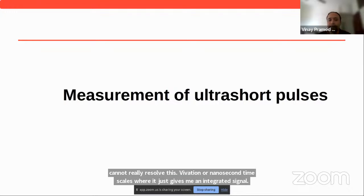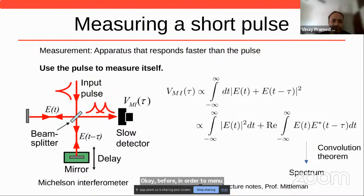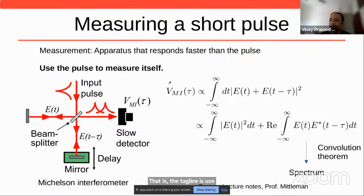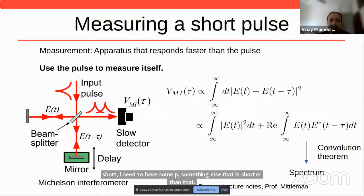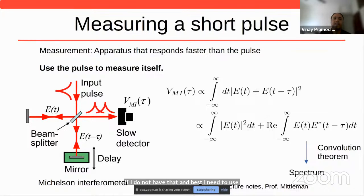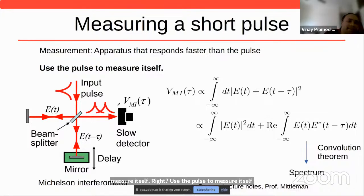To measure such ultrashort pulses, the technique researchers use is interference — the tagline being: use the pulse to measure itself. If I want to measure length, I need a scale shorter than the length I'm measuring. If I don't have something shorter than the pulse, at best I need to use the pulse itself to measure itself. This is a simple Michelson interferometer: there is an incident pulse, a beam splitter, a delay line, and the detector sees a product of E of t and E of t minus tau.